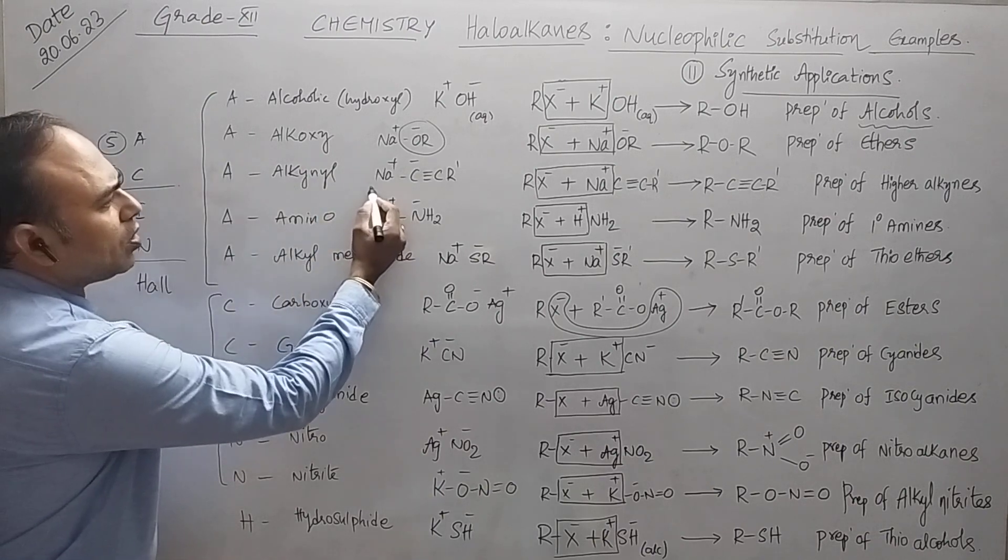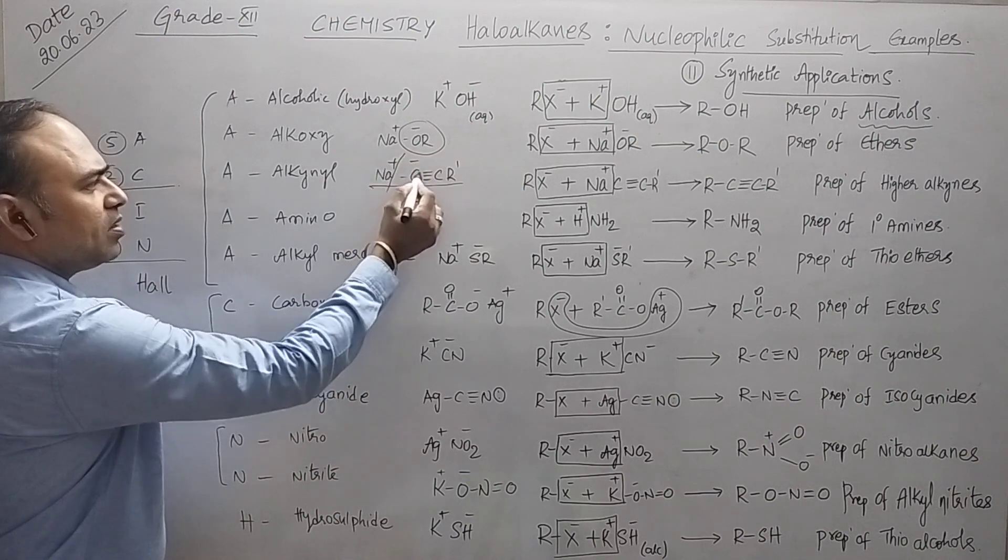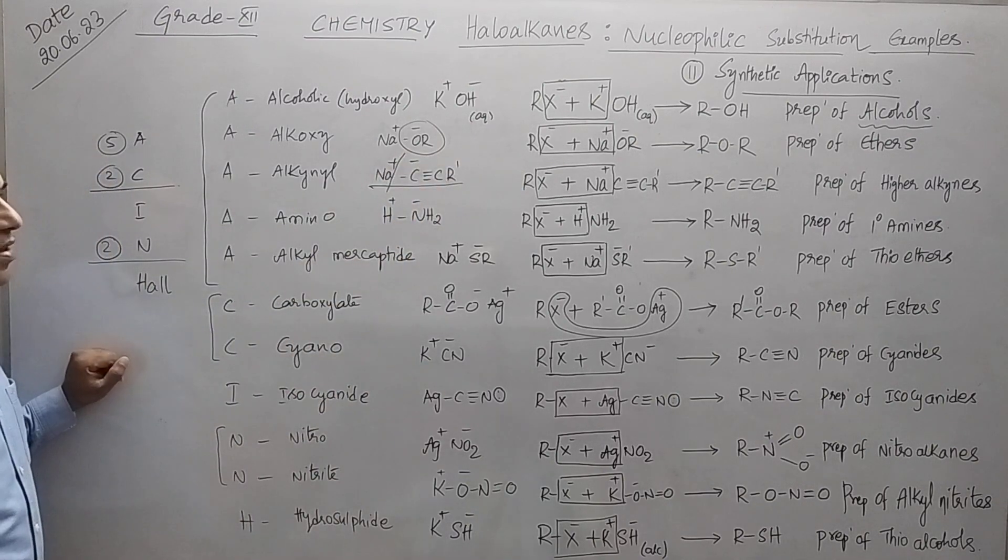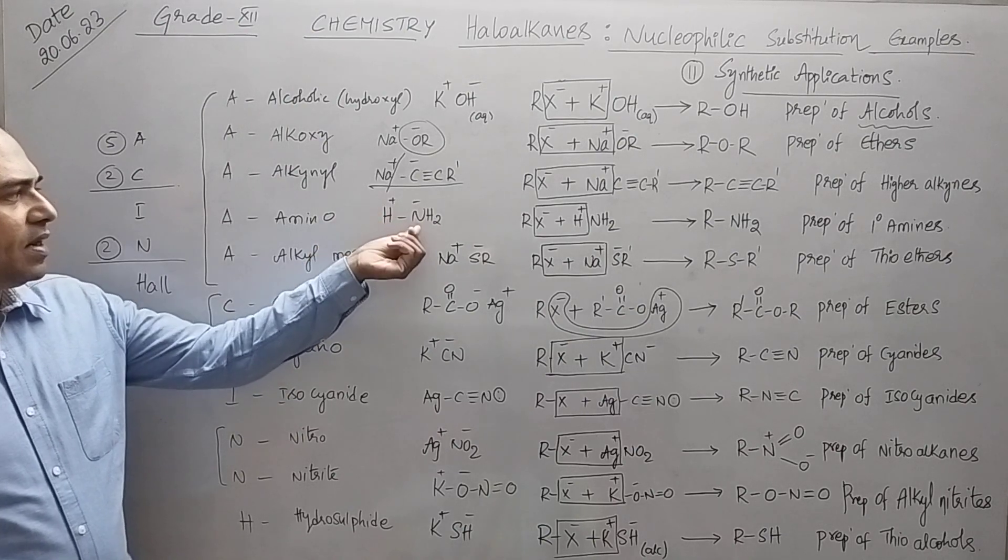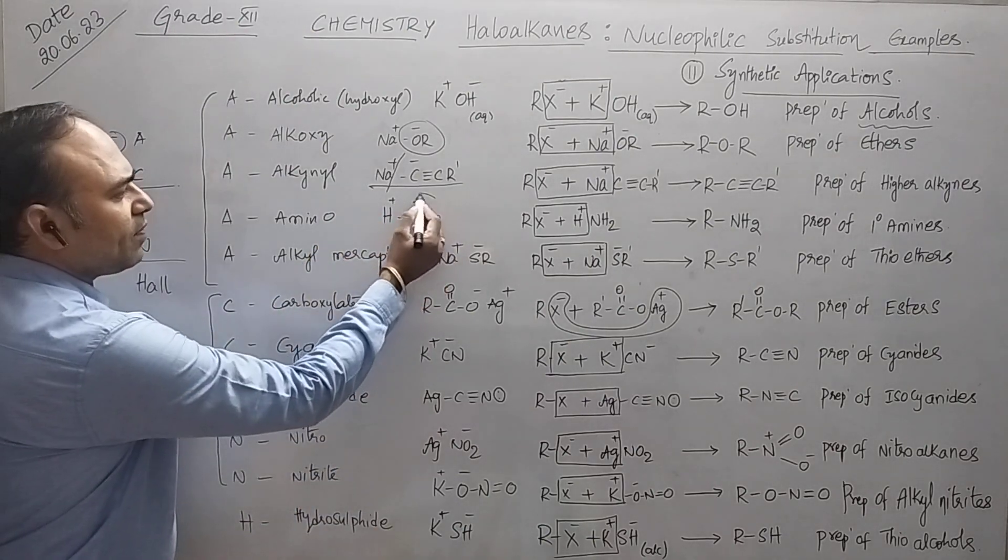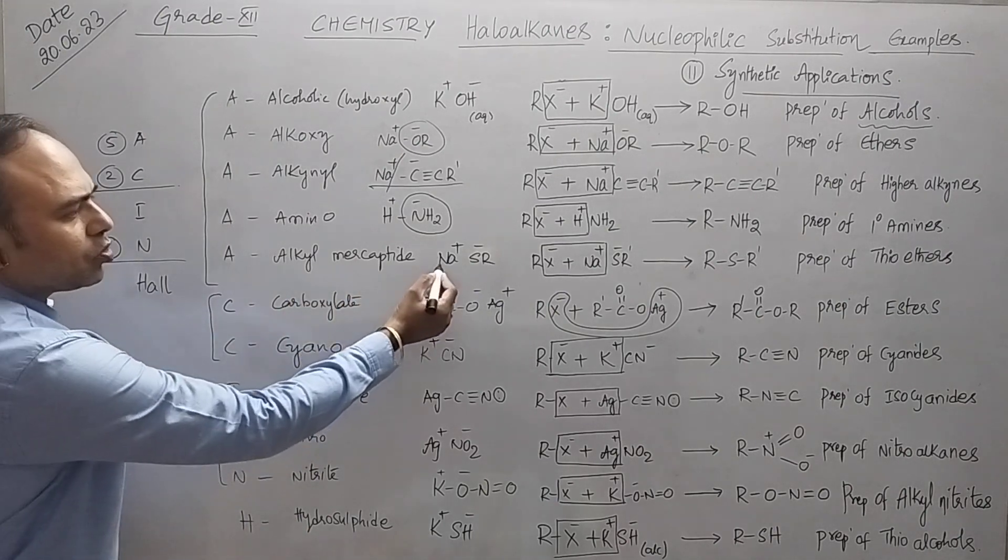Next step, alkanyl group, so sodium alkanide here, so we will have this one as the nucleophile. Next, NH3 ammonia that can be split into H plus and NH2 minus, where you have nucleophile NH2.